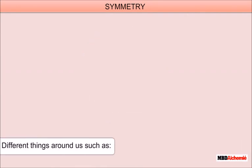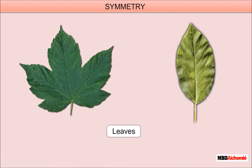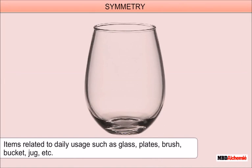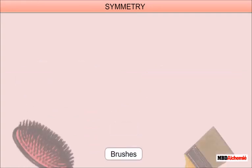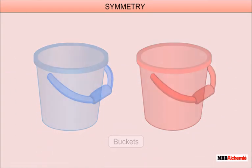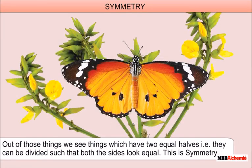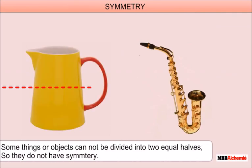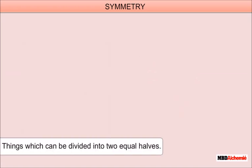Different things around us such as leaves, flowers, insects, and items related to daily usage such as glass, plates, brushes, buckets, and jugs — out of those things, we see things which have two equal halves, that is, they can be divided such that both sides look equal. This is symmetry. Some things or objects cannot be divided into two equal halves, so they do not have symmetry.